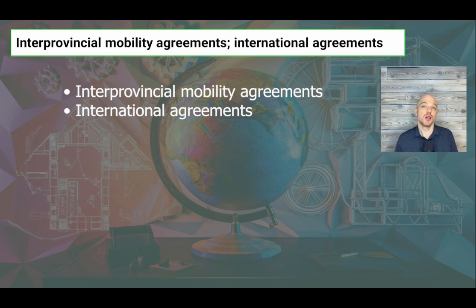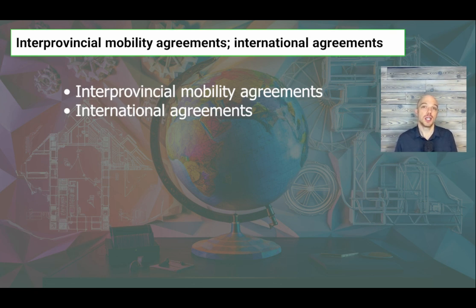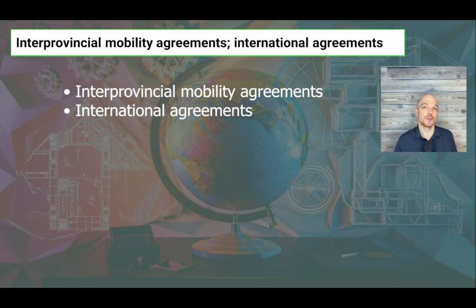International mobility agreements facilitate the movement of engineers between Canada and other countries by providing a streamlined process for licensing and recognition of qualifications. The Washington Accord, established in 1989 and consisting of around 20 countries, is an international agreement facilitating the mobility of professional engineers and geoscientists across borders. This agreement, which Canada is a part of, helps recognize the academic requirements of those graduated from accredited engineering degree programs, which can help reduce some of the licensing steps when an engineer is looking to relocate.